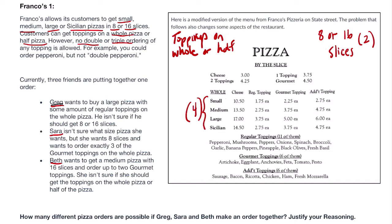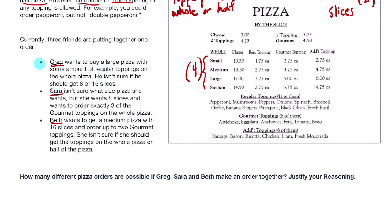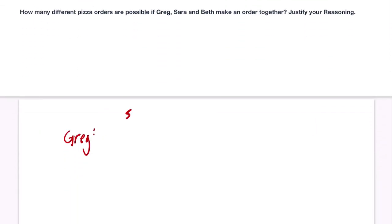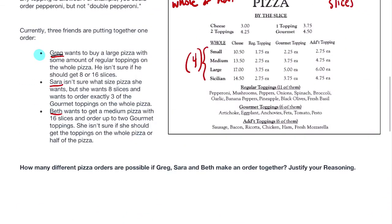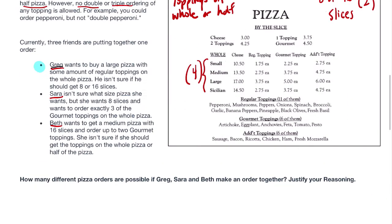So we'll start with Greg. Greg wants to buy a large pizza with some amount of regular toppings on the whole pizza. He isn't sure if he should get eight or 16 slices. So I'm going to keep track of this right here. So for Greg, we know he wants to buy a large pizza. So for size, keep track of this. For size, there's only one choice for Greg. He knows what size he wants. And he knows that he's not sure about the slices. Slices, is it eight or 16? He's got two choices.